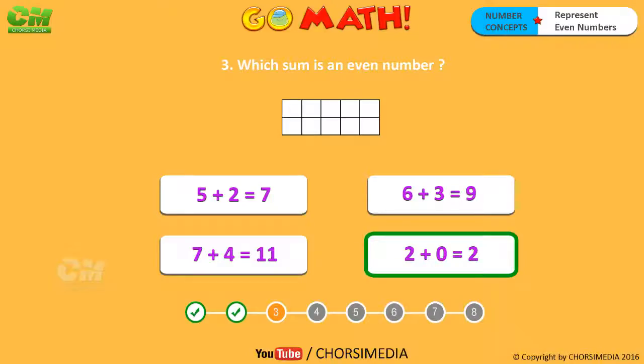Which sum is an even number? You are right! The correct answer is two plus zero equals two. Two is an even number.